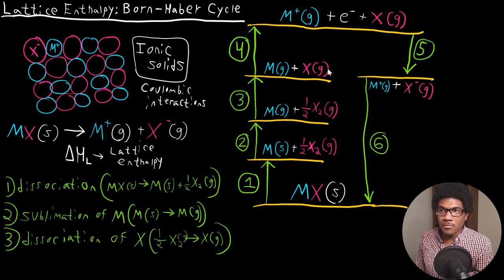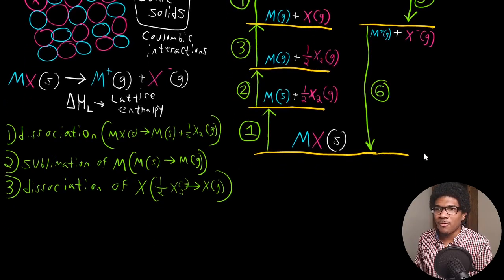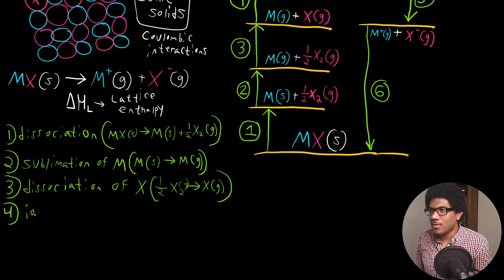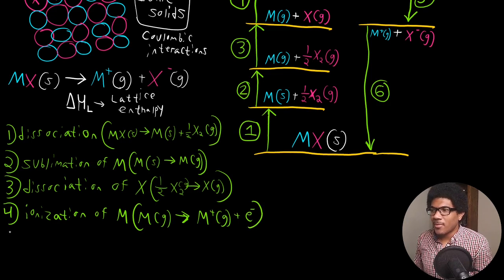Step four: X stays the same as a gas. What happens here is the ionization of the metal — we're ionizing the metal and forming a free electron. So step four is the ionization of M. We start with M as a gas and ionize it to get the cation M+ plus a free electron.